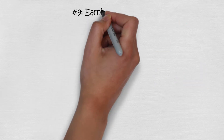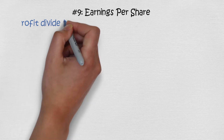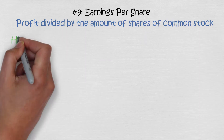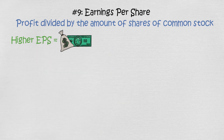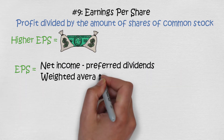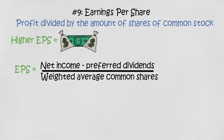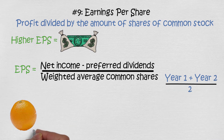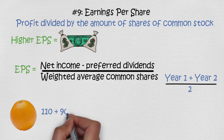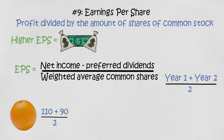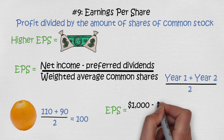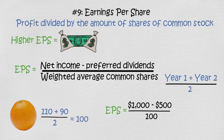Financial ratio number 9: earnings per share. Earnings per share shows a company's profit divided by the number of common shares outstanding. The higher the EPS, the more profitable the company is considered. The basic formula is net income minus preferred dividends, divided by the weighted average common shares. Weighted average means shares this year plus shares last year divided by 2. If Orange had 110 shares last year and 90 this year, the weighted average is 100. With net income of $1,000 and preferred dividends of $500, EPS equals $5.